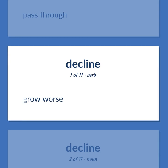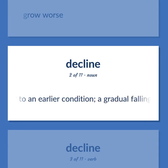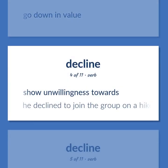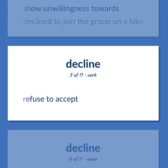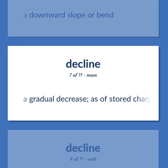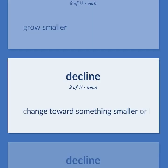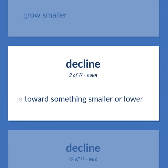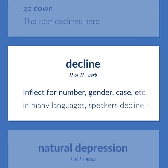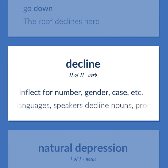DECLINE: Grow worse. A condition inferior to an earlier condition; a gradual falling off from a better state. Go down in value. Show unwillingness towards — he declined to join the group on a hike. Refuse to accept. A downward slope or bend. A gradual decrease, as of stored charge or current. Grow smaller. Change toward something smaller or lower. Go down — the roof declines here. Inflect for number, gender, case, etc. — in many languages, speakers decline nouns, pronouns, and adjectives.